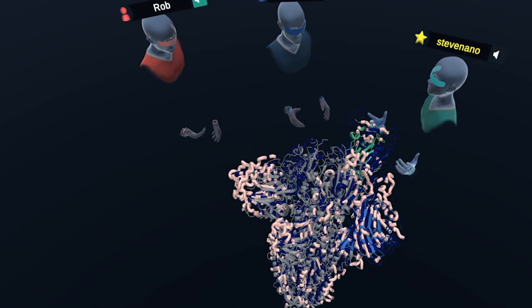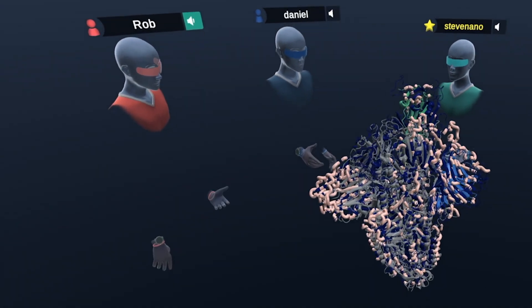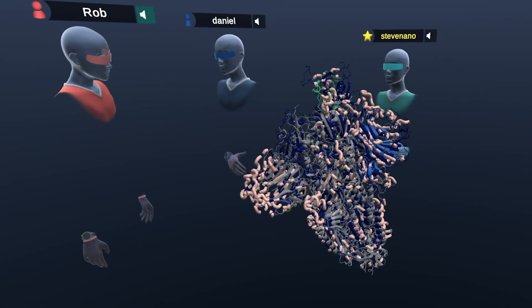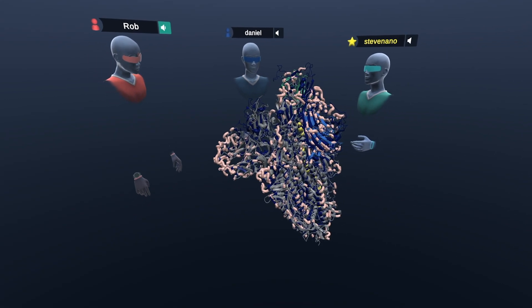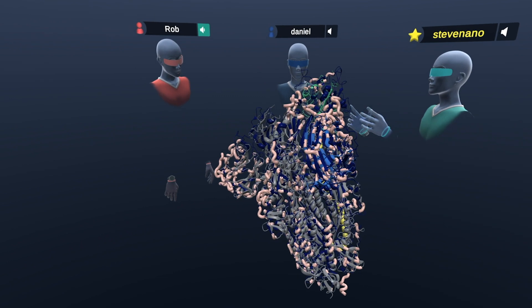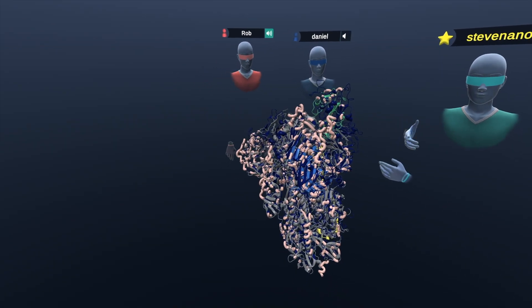So it seems like currently the theory is that because this receptor binding domain has such a much higher binding affinity to the human ACE2 receptor, that might be what's driving the increased infectivity of this novel coronavirus. And that makes the receptor binding domain a really important target for anti-coronavirus drugs.